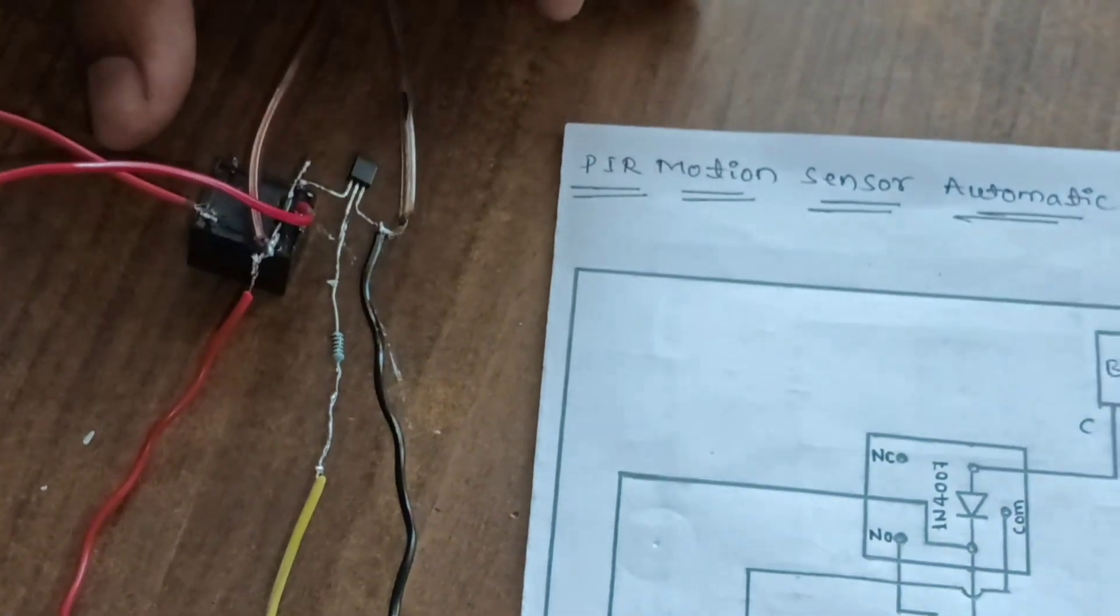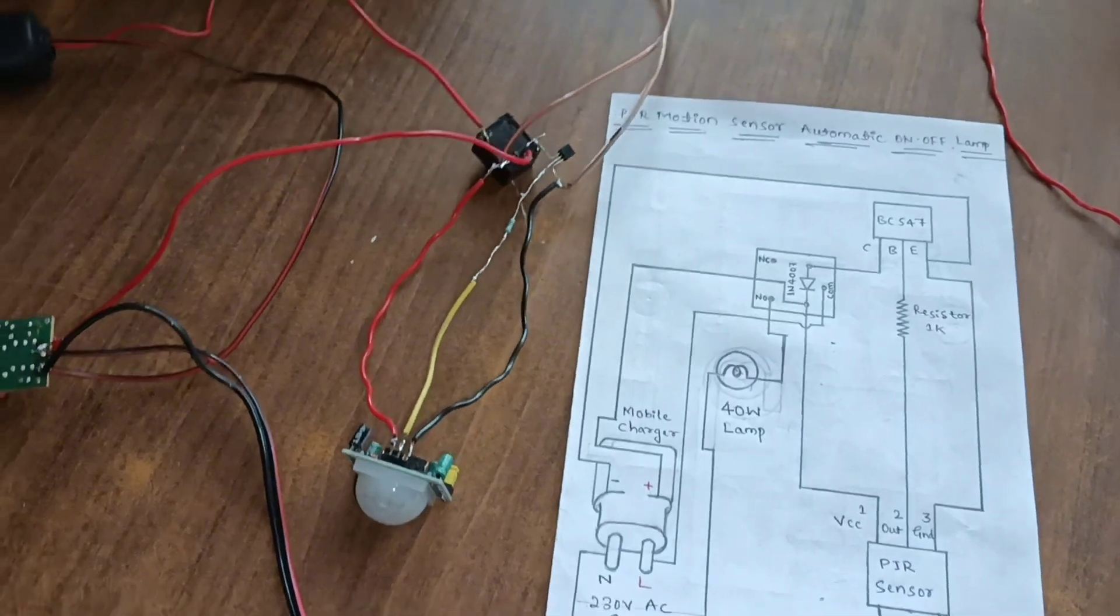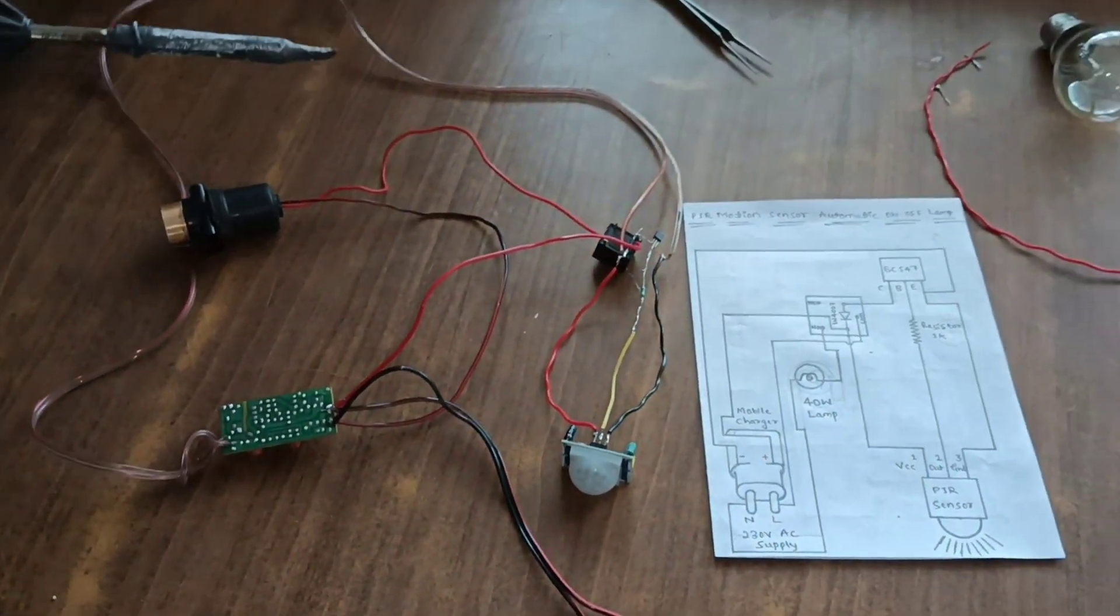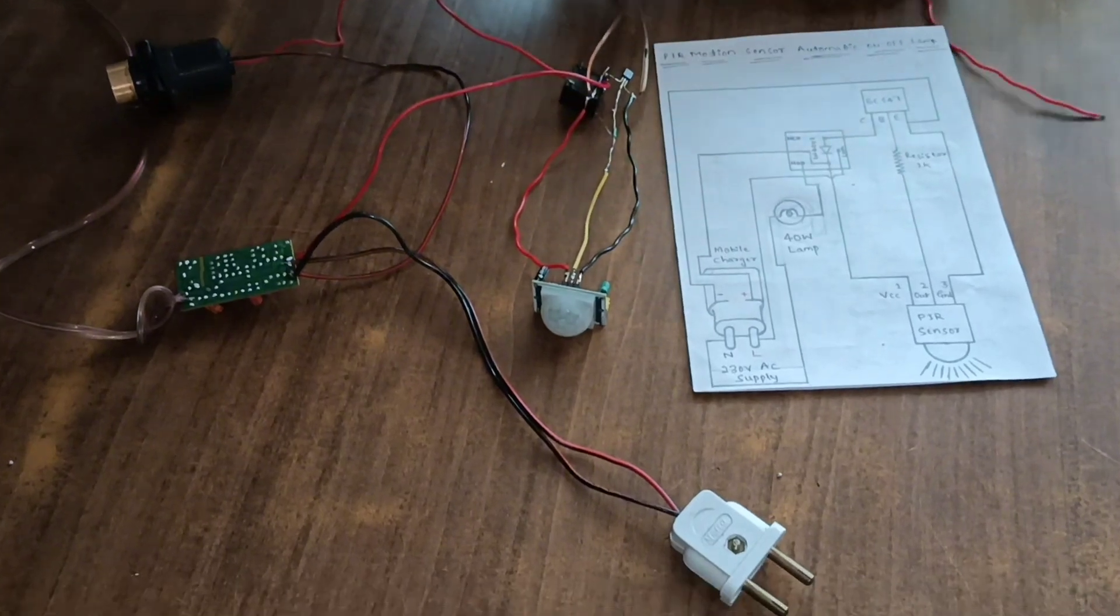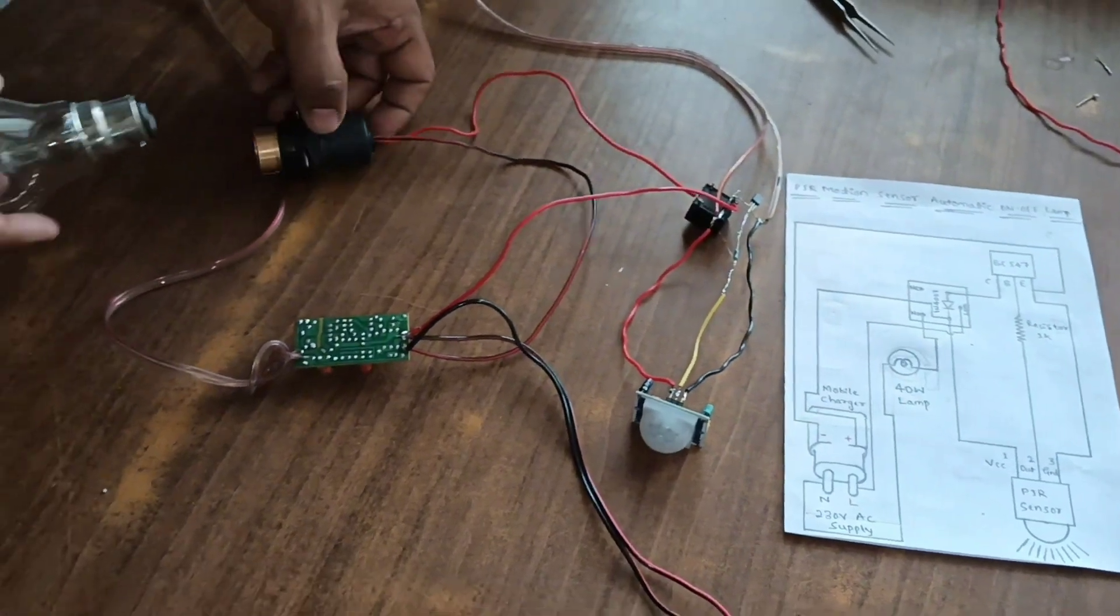Now the connection is over of PIR motion sensor automatic on lamp. We connect lamp to this holder.